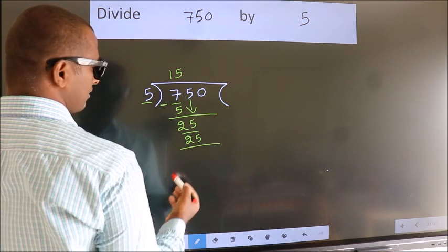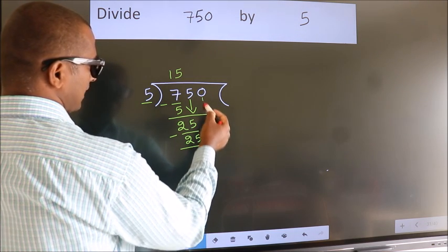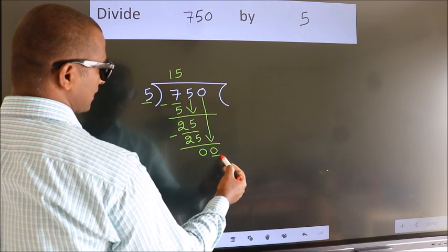Now we subtract. We get 0. After this, bring down the beside number. So 0 down. So 0.